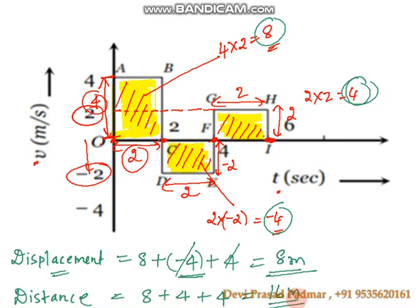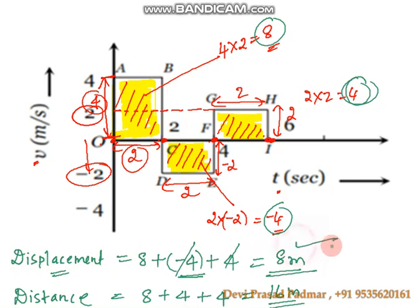I hope you got the difference between distance and displacement. While calculating displacement, if there is a minus sign, you need to keep that minus sign as it is. But for distance, you need to consider only the magnitude. The answer is displacement is 8 metres and distance is 16 metres.